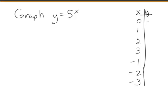5 to the 0 is 1. 5 to the 1 is 5. 5 squared is 25. 5 cubed is 125. These numbers are going up really quickly.